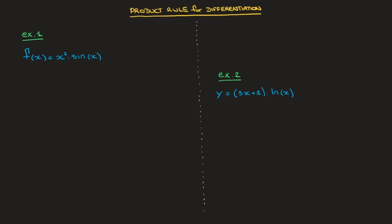Hi everyone, we now learn about the product rule for differentiation. Put simply, we're about to learn how to differentiate two functions that are being multiplied together. By the end of this tutorial, we'll have no trouble differentiating each of the two functions we see here. But to get us started, let's learn the formula.